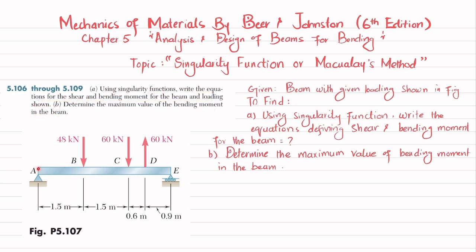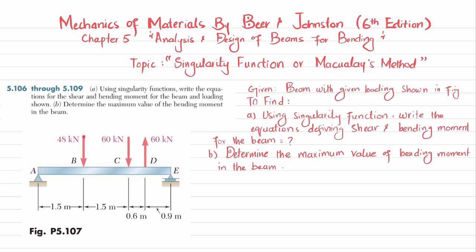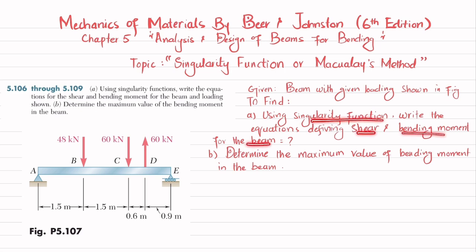In part B, determine the maximum value of bending moment in the beam. This is a simply supported beam having a pin support at point A and a roller support at point E. There is a point load of 48 kilonewtons at B, 60 kilonewtons at C, and a 60 kilonewton load at D as well. We have to determine the shear and bending moment equations using singularity functions.